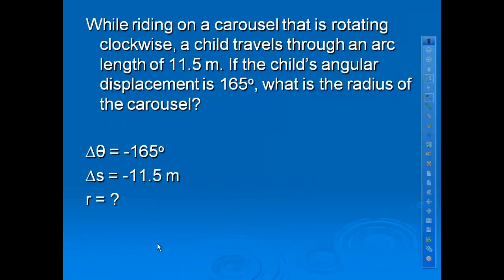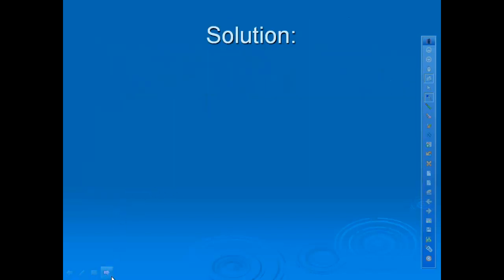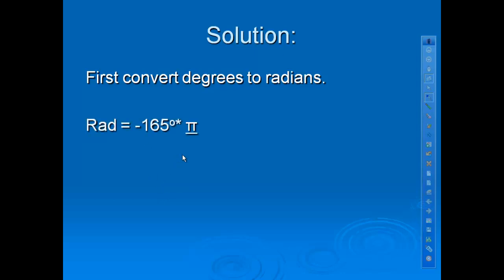So let's do an example real quick. This says, while riding on a carousel, rotating clockwise, a child travels through an arc length of 11.5. A child's angular displacement is 165 degrees. What is the radius of the carousel? So here are our values. 165 degrees is the angular measurement. 11.5 is your arc length. And we want to know how big the carousel is. So, first things first. We have a degree measurement and that's not going to work for what we're going to do with angular motion. So we need to convert that into radians. To do that, we're going to take the degrees and multiply it by π over 180. Very, very simple. Then we get radians of 2.88 radians. So almost halfway around the carousel.